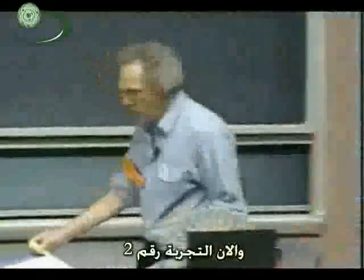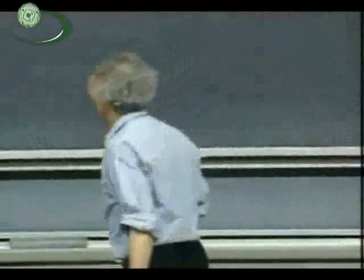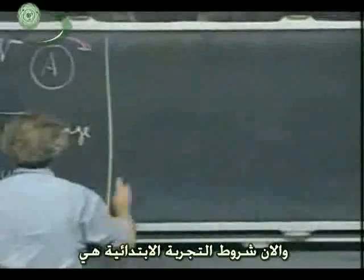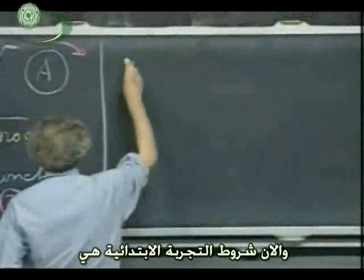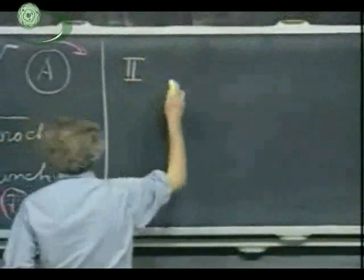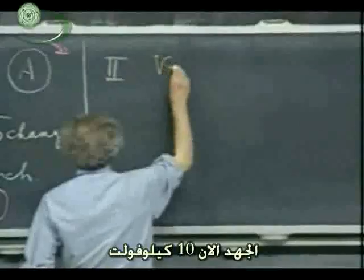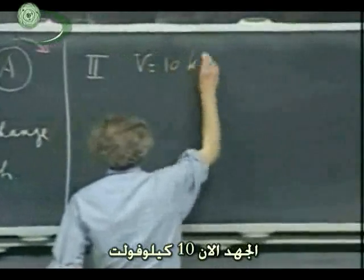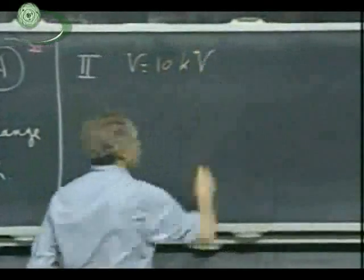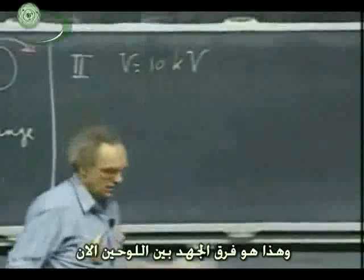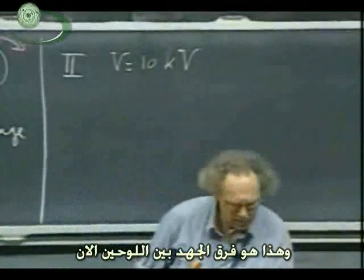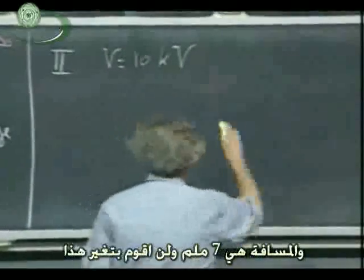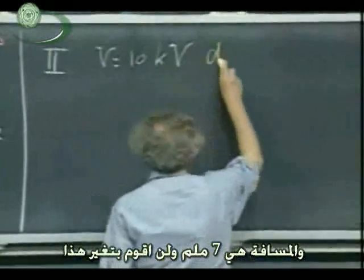So now comes number two. My initial conditions are that V is now ten kilovolts — that's the potential difference between the plates — and the gap D is now seven millimeters.